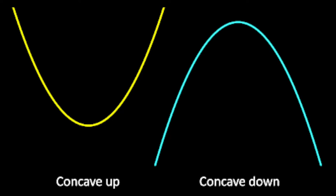Without wasting much time, let's get started. First, we have to understand the concept of curves that are concave up and curves which are concave down. Let me show you two such curves for your understanding — one being a curve which is concave up and the other being a curve concave down. For the proof, we can start with either of the two curves, but as an example I have started with the concave down curve.